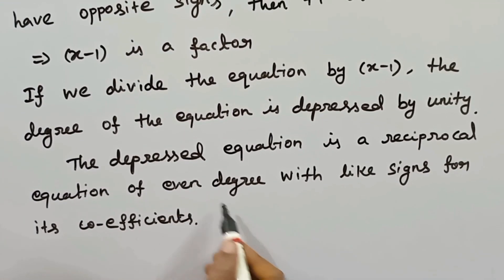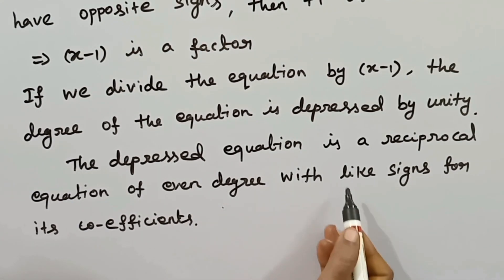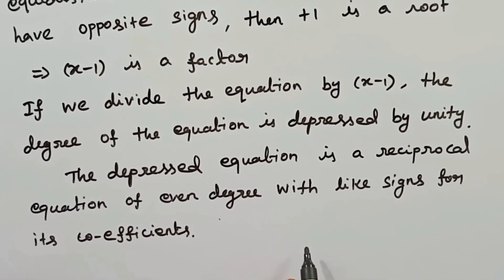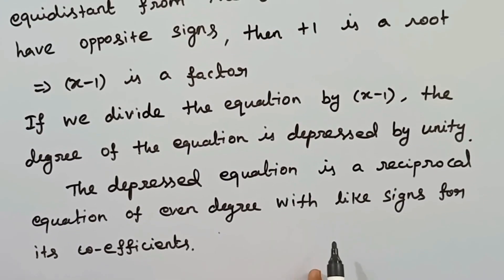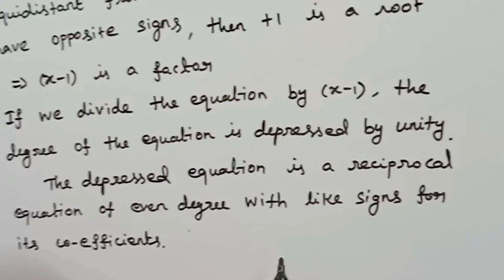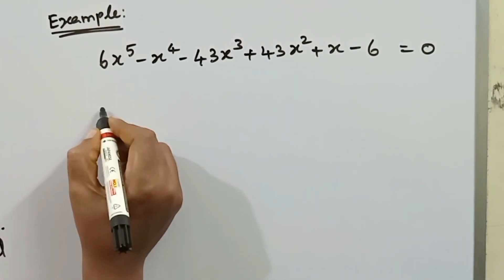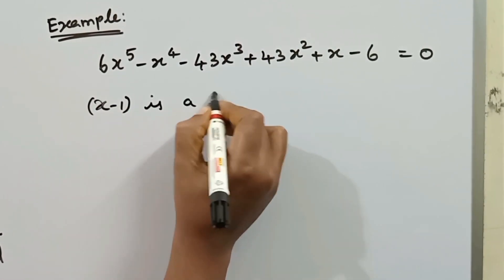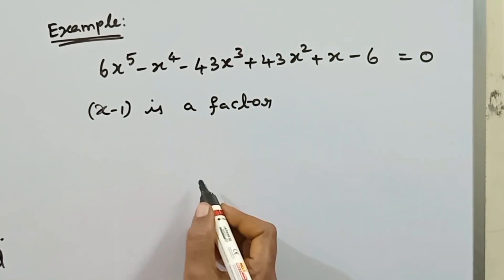The depressed equation is a reciprocal equation of even degree with like signs for its coefficients. So odd degree unlike sign reduces to even degree like sign — the standard form. We divide the equation by x minus 1, and then convert to even degree like sign reciprocal equation.